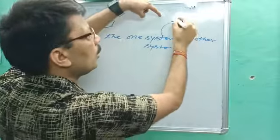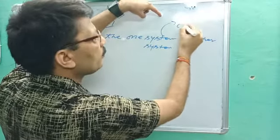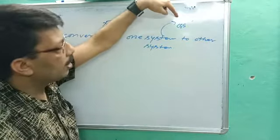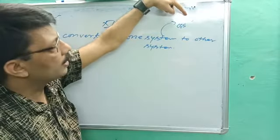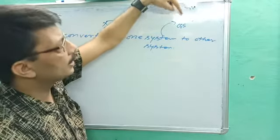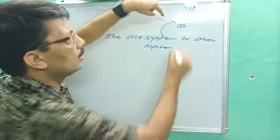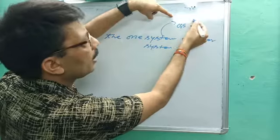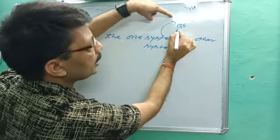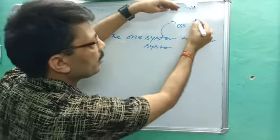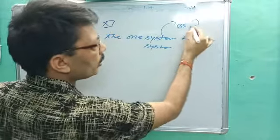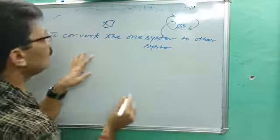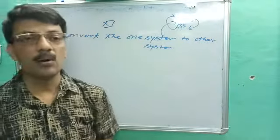In the MKS system: M is for mass in kilogram, K for kilometer, S for second. In the CGS system: it is centimeter, gram, and second. If MKS is given, you can convert into CGS; if CGS is given, you can convert into MKS, but you must have full knowledge of dimensional formula and dimensional equations.